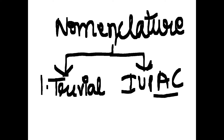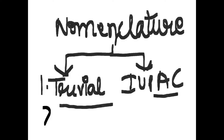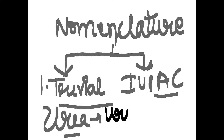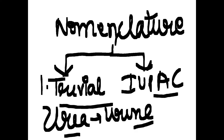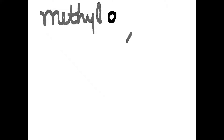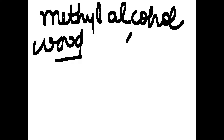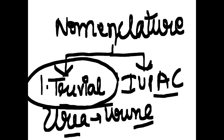In the trivial system, in earlier days organic compounds were named after the source from which they were obtained. For example, urea got its name because the compound was obtained from the urine of mammals. Methyl alcohol was called wood spirit because it was obtained as one of the products during the destructive distillation of wood. And formic acid derives its name from the Greek word 'formicus' meaning red ants, since the acid could be obtained from red ants. Such a system is termed as the trivial system of nomenclature.